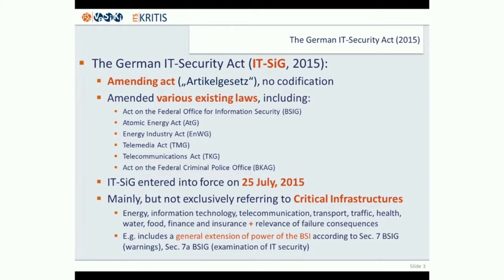So what is the critical infrastructure under German law? There is a catalogue: energy, information technology, telecommunication, transport, traffic, health, water, food, finance, and insurance. Additionally, there has to be a so-called relevance of failure consequences — meaning if such critical infrastructure does not work properly, there are significant consequences.